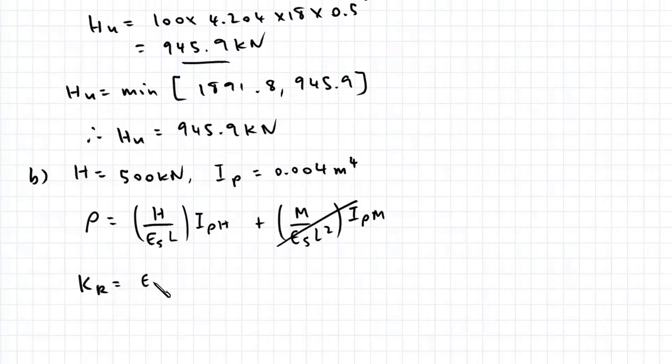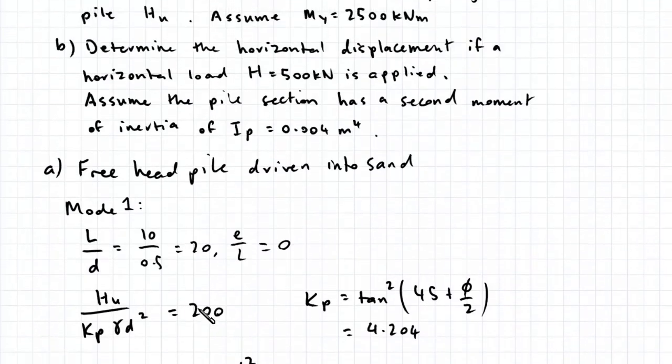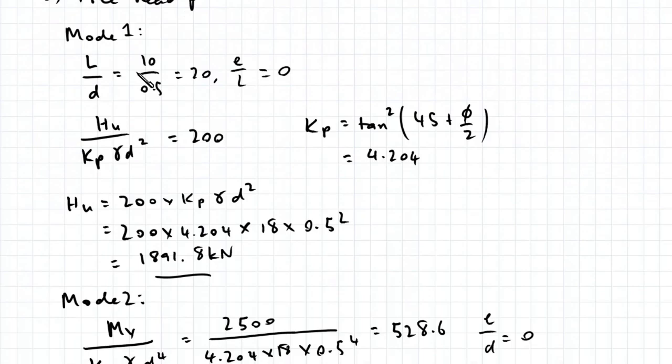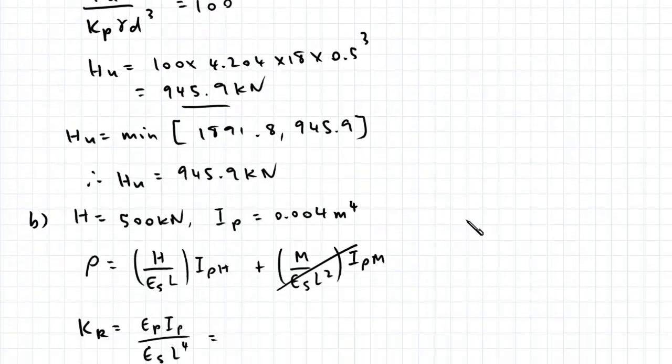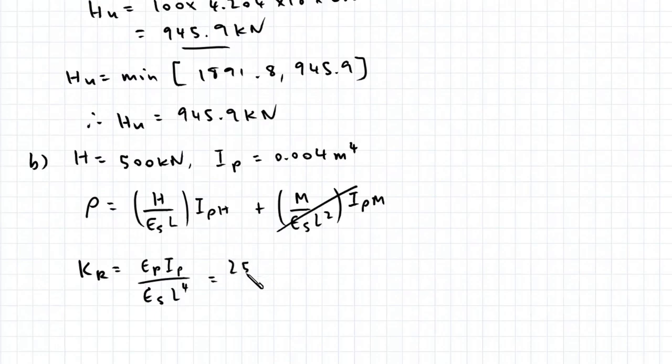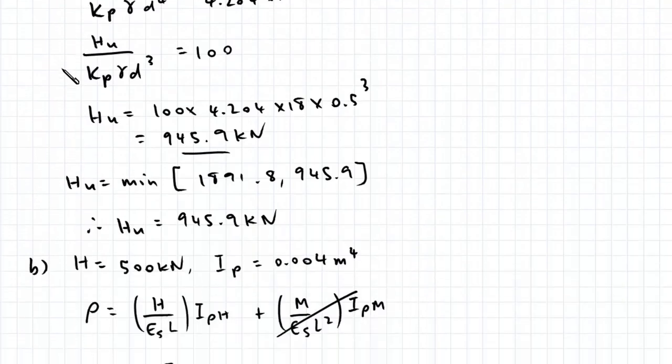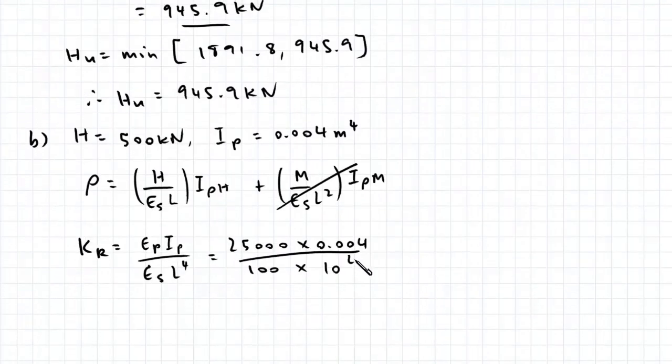First, we need to determine this value Kr, which is equal to EP IP over ESL to the power of 4. If we go back up here, EP and ES are 25,000 and 100, respectively. That's 25,000 times 0.004 over 100 times the length of the pile, which is 10 meters to the power of 4. This works out to be 10 to the power of negative 4.